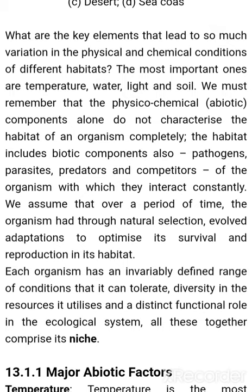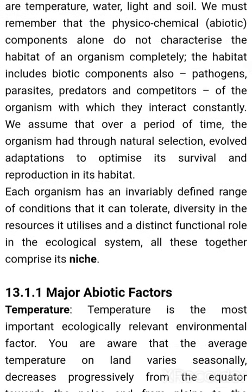What are the key elements that lead to so much variation in the physical and chemical conditions of different habitats? The most important ones are temperature, water, light, and soil. We must remember that the physical and chemical abiotic components alone do not characterize the habitat of an organism completely. The habitat includes biotic components also — pathogens, parasites, predators, and competitors — with which the organism interacts constantly. Over time, organisms have through natural selection evolved adaptations to optimize survival and reproduction in their habitat. Each organism has an invariably defined range of conditions it can tolerate, diversity in the resources it utilizes, and a distinct functional role in the ecological system — all these together comprise its niche.